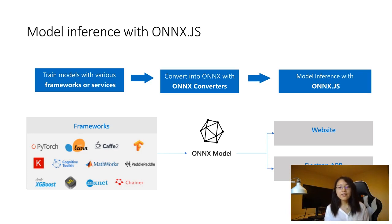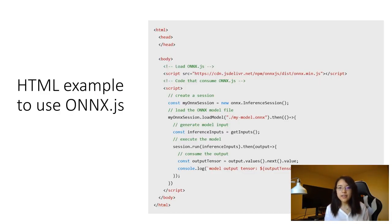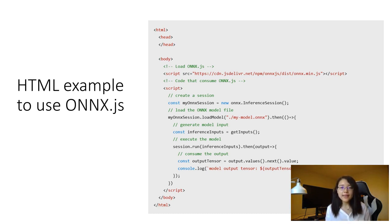Here is an HTML example to use ONNX.js. There are three steps: create an ONNX session, download the ONNX model and generate inputs, then run the model with the session's run method.